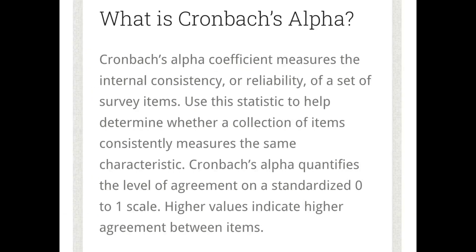Cronbach's Alpha measures the internal consistency of reliability. It includes a set of survey items or questionnaire items collected from research subjects. Higher alpha levels indicate that the tool is highly consistent or reliable, while low alpha levels indicate less reliability or that the tool is unreliable. The alpha scores range from 0 to 1 — higher values mean higher reliability, and lower values mean the items in the tool are not well related to each other.